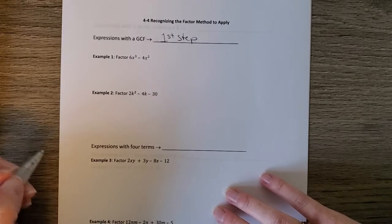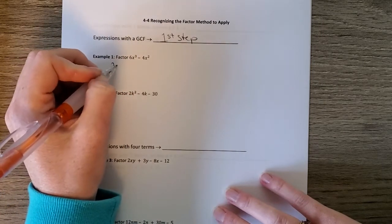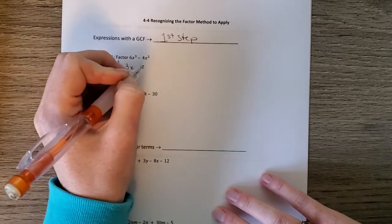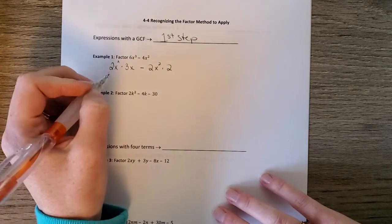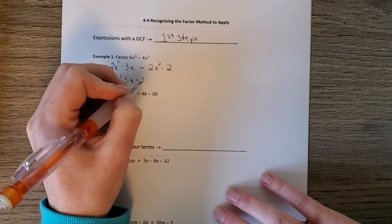So for example 1, for instance, the GCF of this would be 2x squared, and so times 3x, and then minus 2x squared times 2. So we factor out the 2x squared, and we get 3x minus 2.